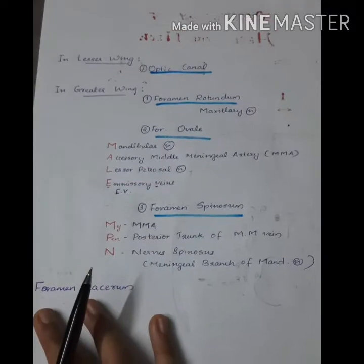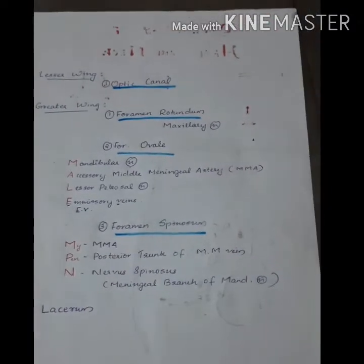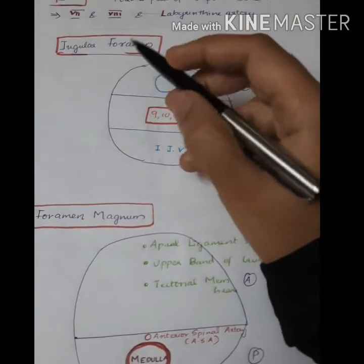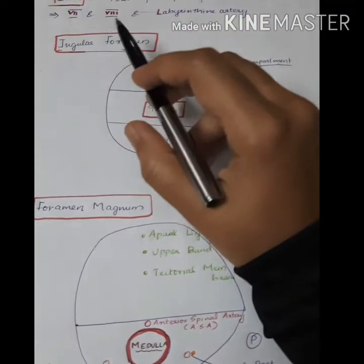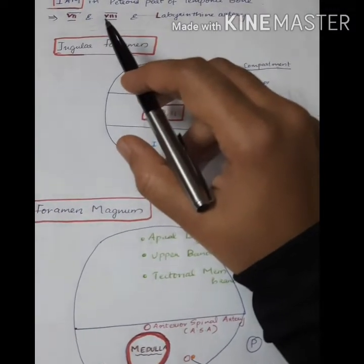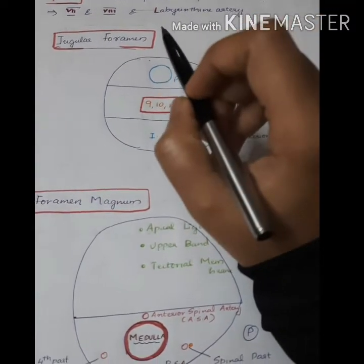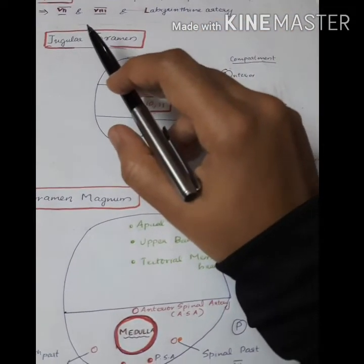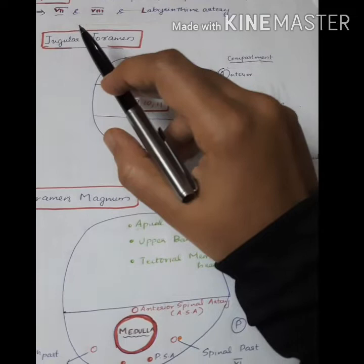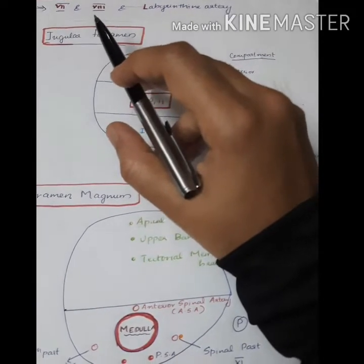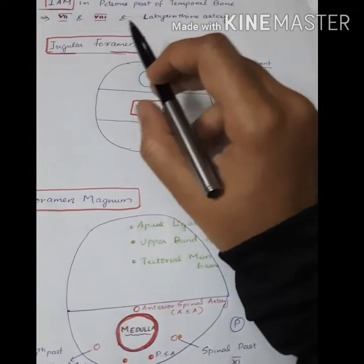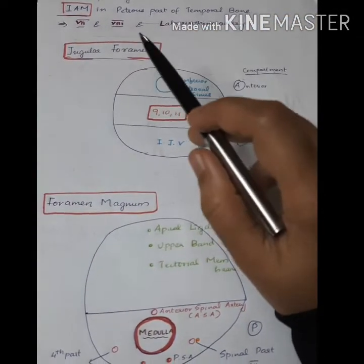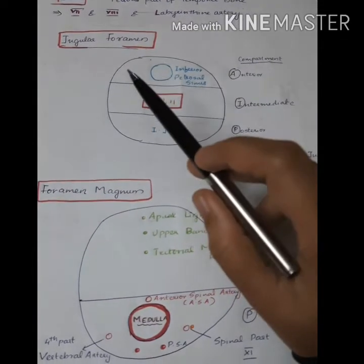Next we can check the structures passing through the internal auditory meatus. The internal auditory meatus is present in the petrous part of the temporal bone. The structures passing through are the 7th and 8th cranial nerves and the labyrinthine artery.